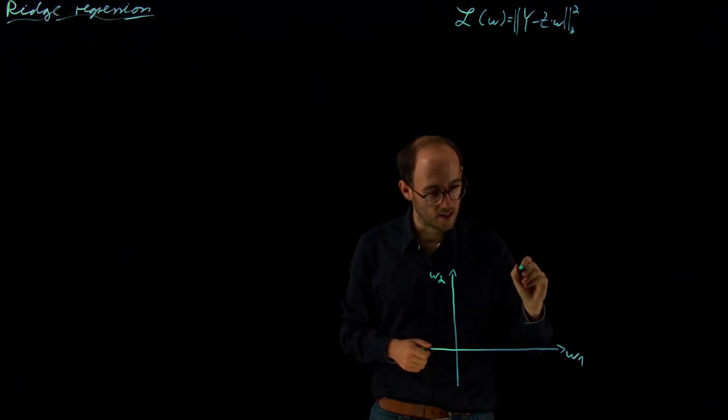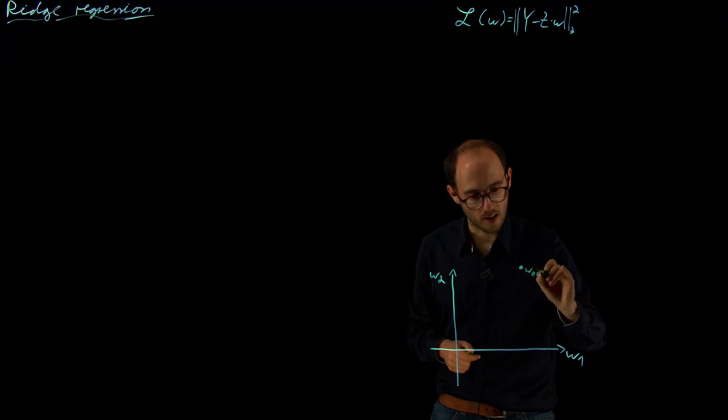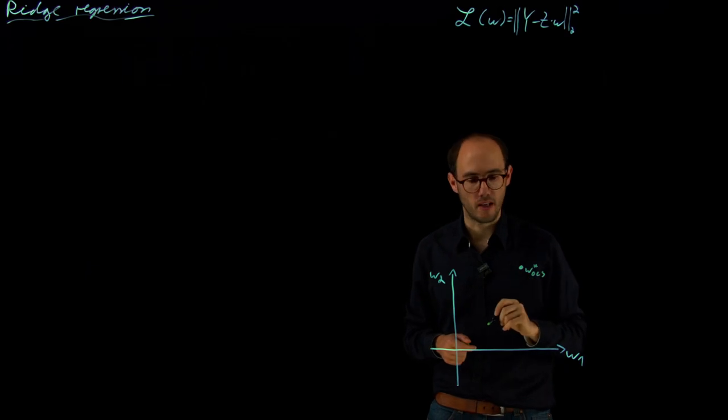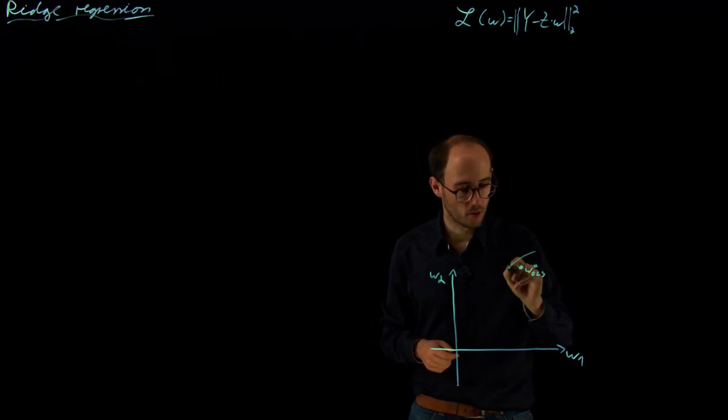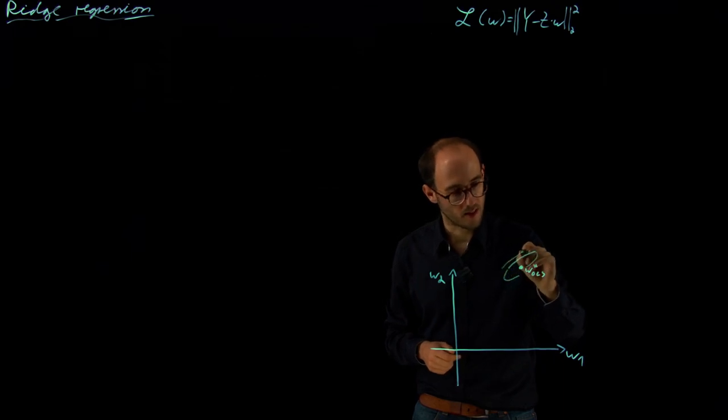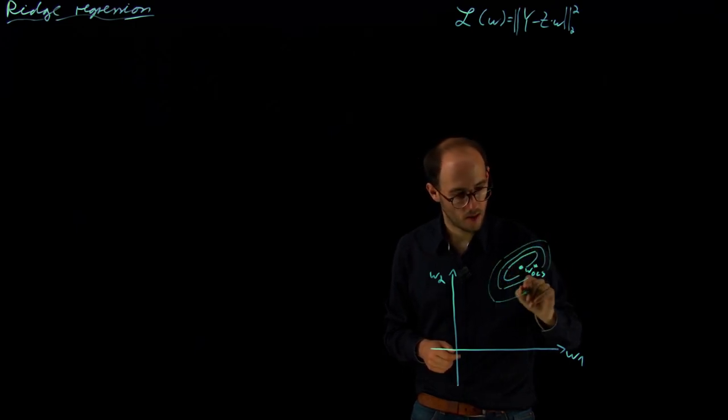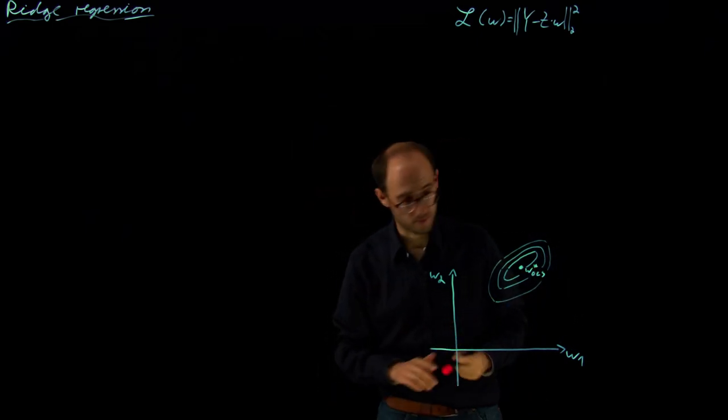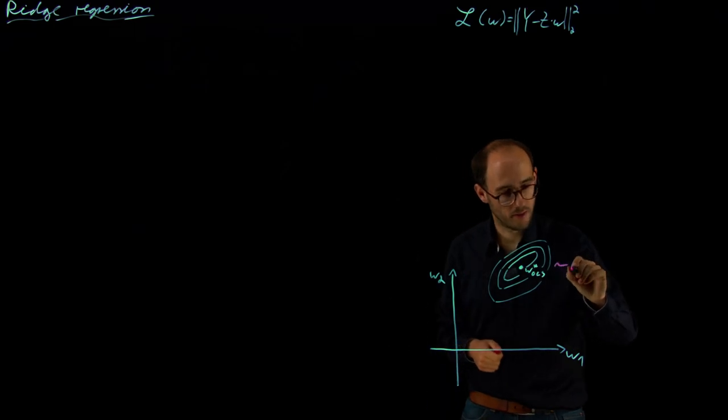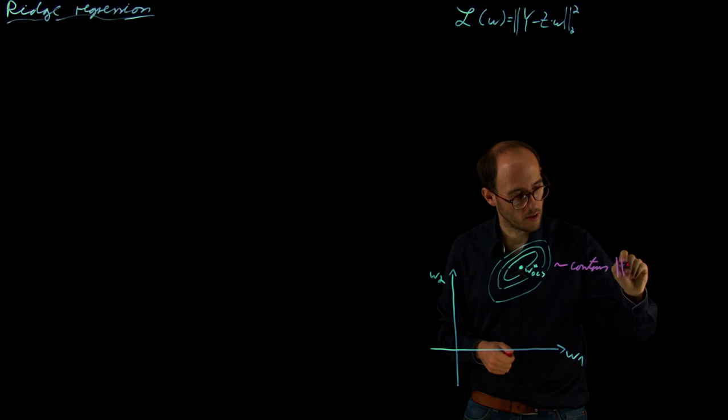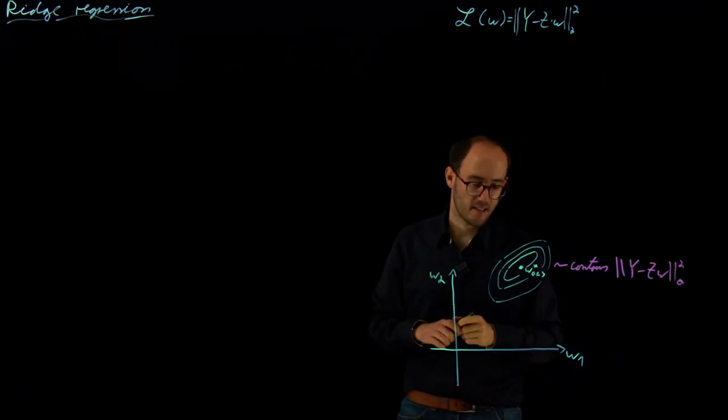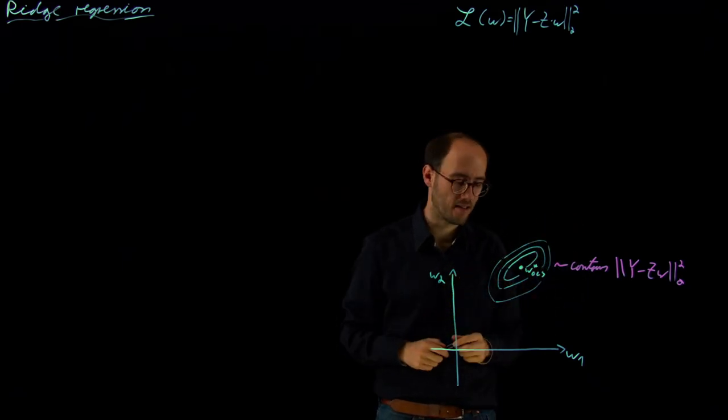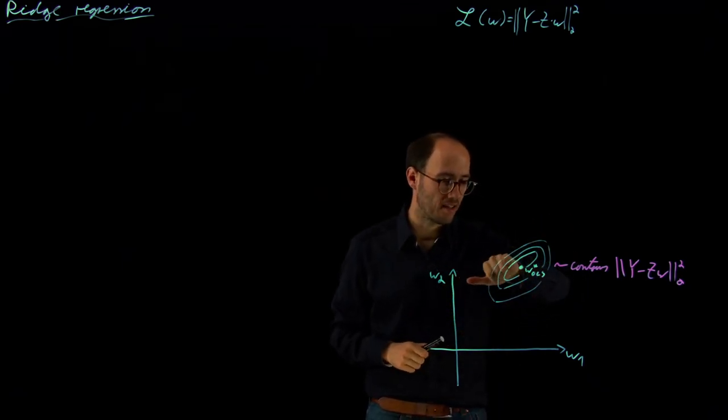Let's suppose our w star, or let's call it w_OLS, the solution of the OLS problem, would be here. And in this context of multicollinearity we will basically find that our cost contours are, for example, like these ellipses. So these are the cost contours of our cost ||y - Z*w||².